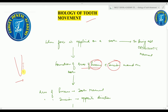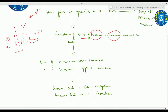The pressure side is the direction in which the tooth has to be moved, while the tension side is the opposite side. Both sides carry an electrostatic charge: the pressure side exhibits a negative charge, while the tension side exhibits a positive charge. On the pressure side, the bone reacts by bone resorption, while on the tension side there is bone deposition.